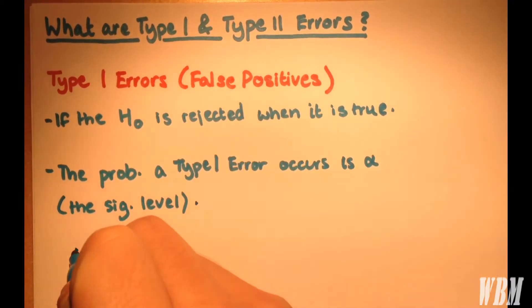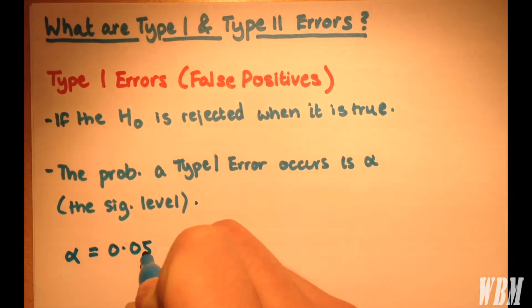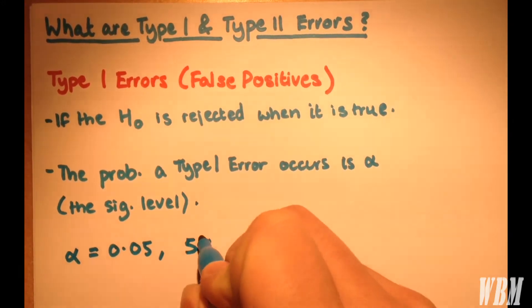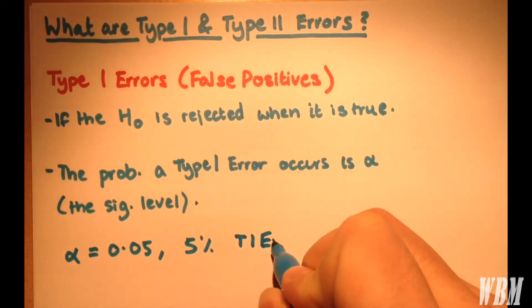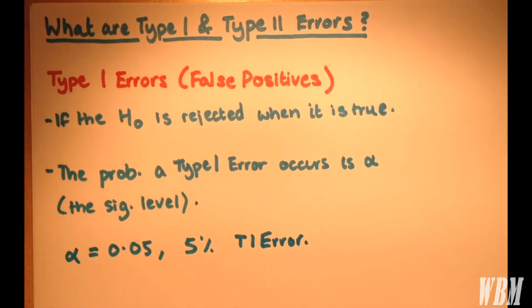So for example, if alpha equals 0.05, there'll be a 5% chance of a Type 1 error, which is straightforward.